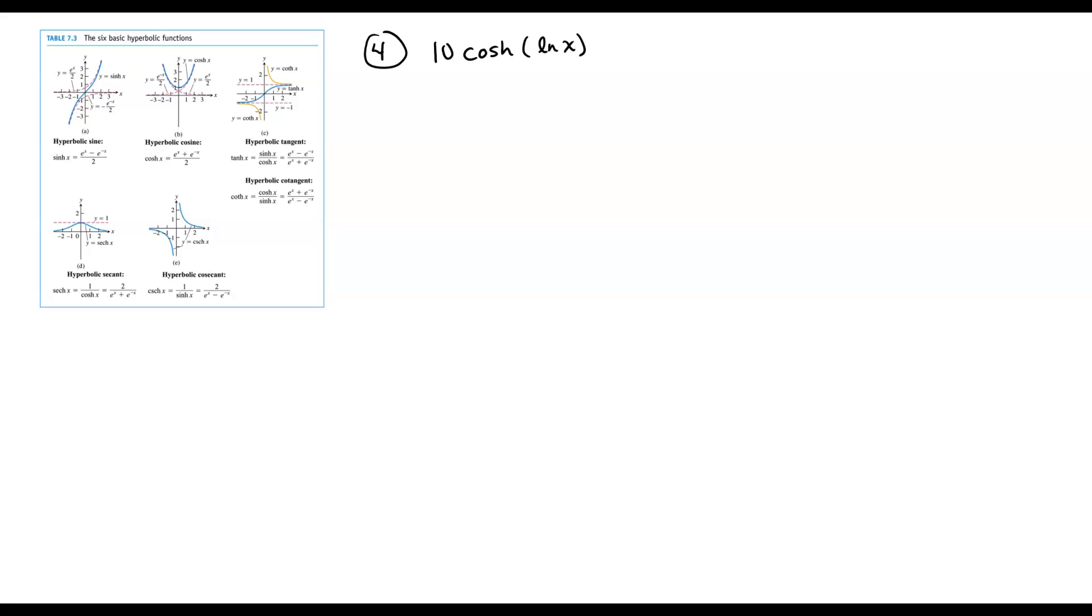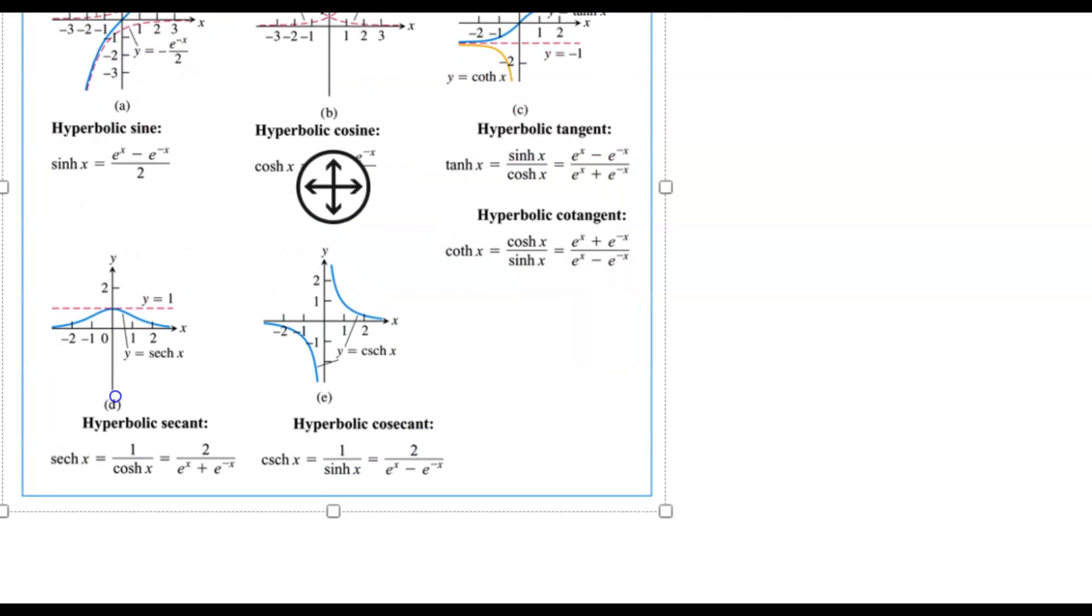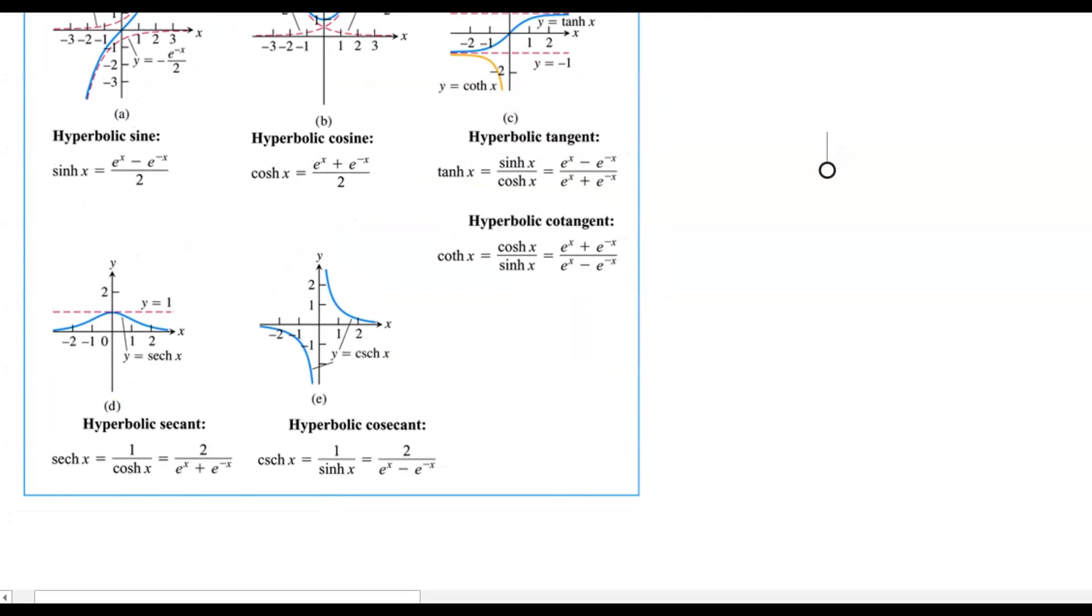Okay, we're continuing our discussion of hyperbolic functions, and we've already talked about and introduced hyperbolic sine, cosine, and tangent, which we call sinh, cosh, tanh. And now there's something important to discuss, and that is these identities that we see here.